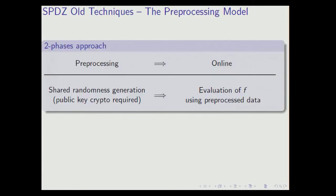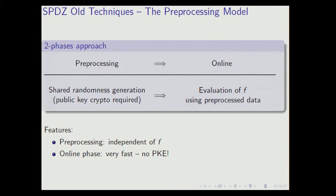We both reach this MPC protocol in the preprocessing model, meaning that the MPC takes place in two phases. A preprocessing phase where players engage in a protocol where they will get some shared randomness at the end. And later on they will engage in an online phase where they will compute the actual function to be computed. Fun fact: the preprocessing is independent of the function, so you can do it months in advance without knowing what you're going to compute later. And another fun fact is that the online phase is extremely fast, because you don't need public key encryption. So, two phases — let's talk about the online phase first, and then the preprocessing.